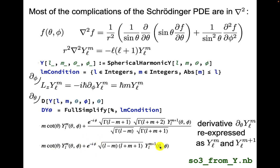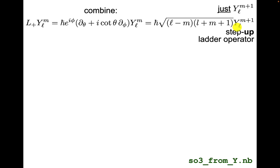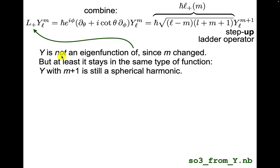So we can look for a linear combination of these two derivatives, possibly with a cotangent in between them and some overall factor, to see if we can just get a single Y_l,m+1. So I'm going to act with this combination, which I call L_+. This is in fact equal to just the Y_l,m+1 with a factor in front. So this is like a step-up ladder operator.